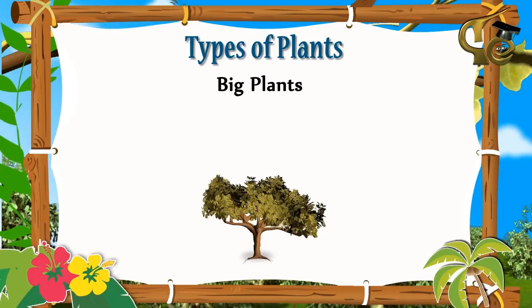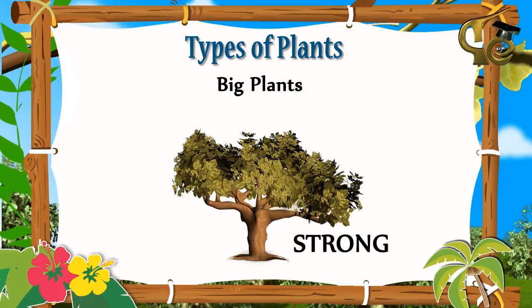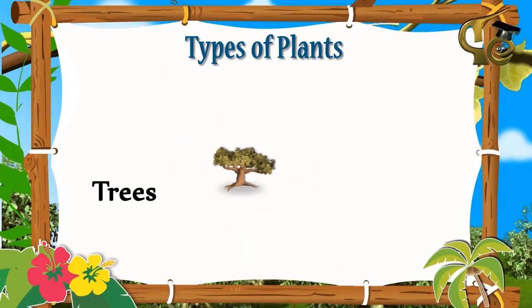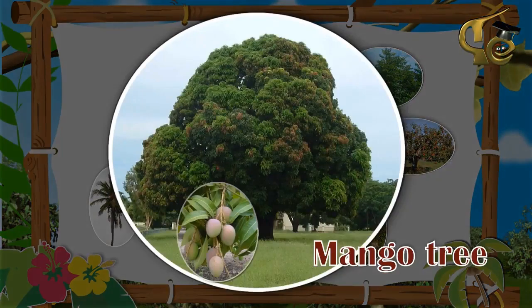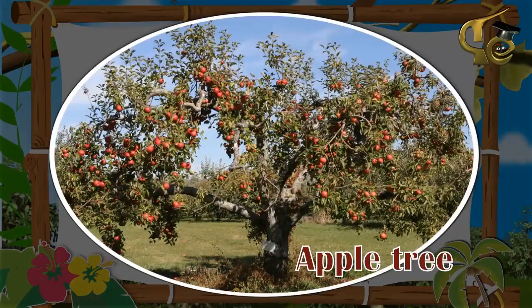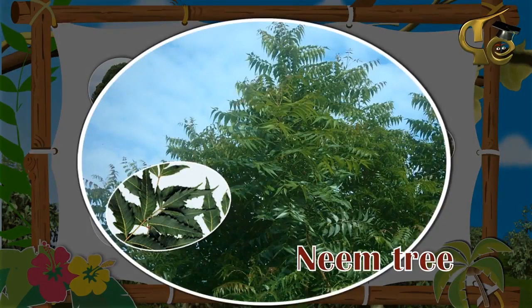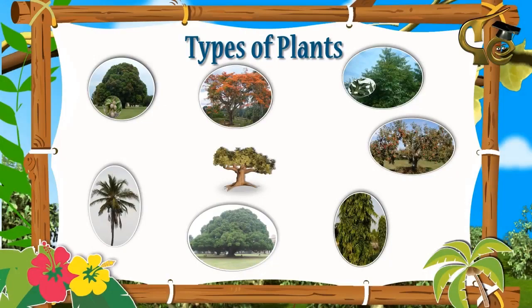Some plants are big and strong. Such plants are called trees. Examples are mango tree, apple tree, neem tree, banyan tree, and coconut tree.